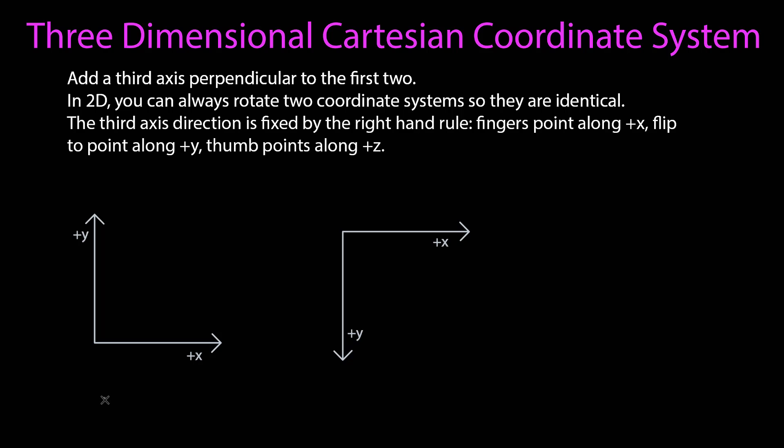Alright, for this first system, if I point my fingers in that direction along x and I flip them so that they'll point along y, my thumb is going to be pointing out of the surface. So the positive z is going to point out in this case.